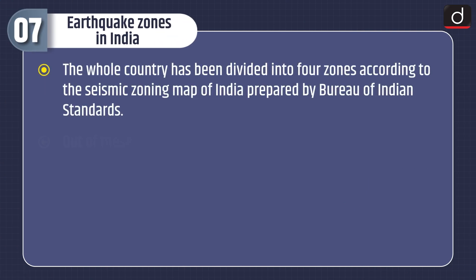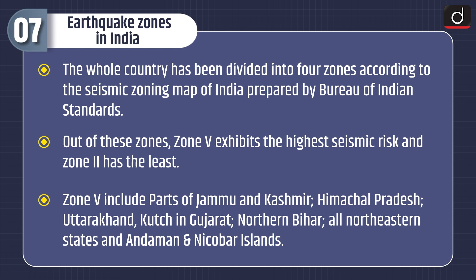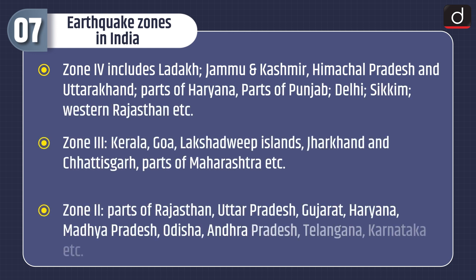Lastly, let's discuss earthquake zones in India. The whole country has been divided into four zones according to the seismic zoning map of India prepared by the Bureau of Indian Standards. Zone 5 exhibits the highest seismic risk and Zone 2 has the least. Zone 5 includes parts of Jammu and Kashmir, Himachal Pradesh, Uttarakhand, Kutch in Gujarat, Northern Bihar, all Northeastern states, and Andaman and Nicobar Islands. Zone 4 includes Ladakh, parts of Jammu and Kashmir, Himachal Pradesh, Uttarakhand, parts of Haryana, Punjab, Delhi, Sikkim, and Western Rajasthan. Zone 3 includes Kerala, Goa, Lakshadweep Islands, Jharkhand, Chhattisgarh, and parts of Maharashtra. Zone 2 includes parts of Rajasthan, Uttar Pradesh, Gujarat, Haryana, Madhya Pradesh, Odisha, Andhra Pradesh, Telangana, Karnataka, etc.